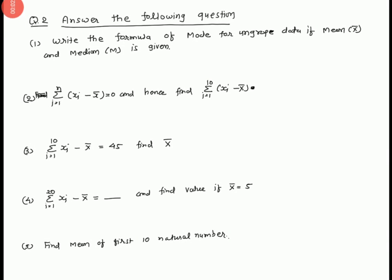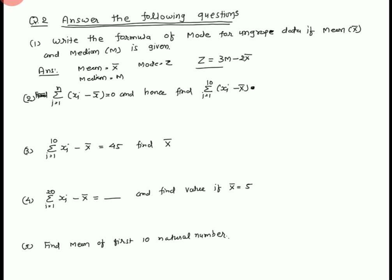Now we start question number 2. Write the formula of the mode for ungrouped data if mean x-bar and median m is given. Mean is equal to x-bar, median is equal to m, mode is equal to z. For ungrouped data, z equal to 3m minus 2x-bar. This is the answer.